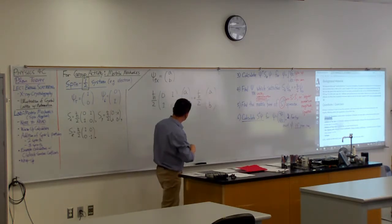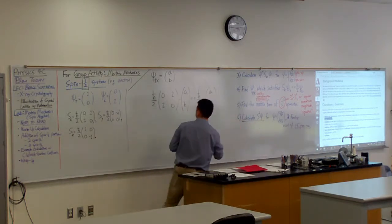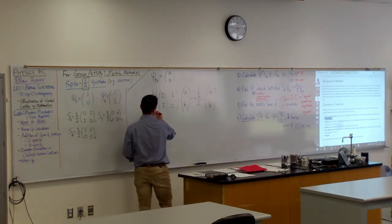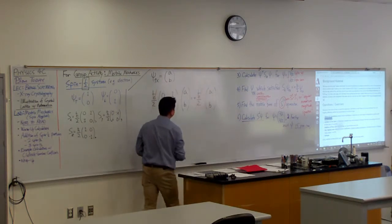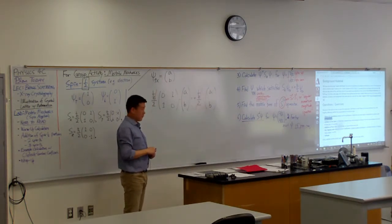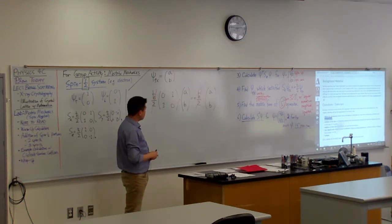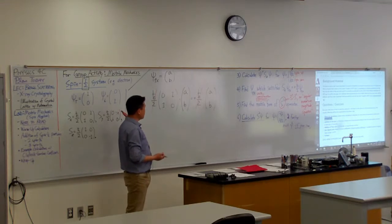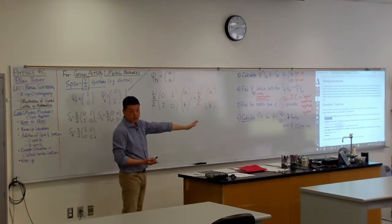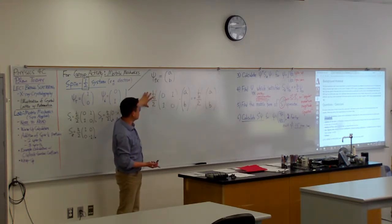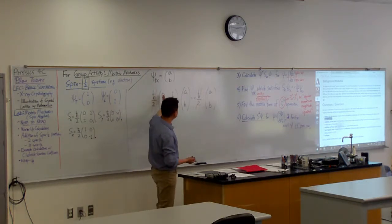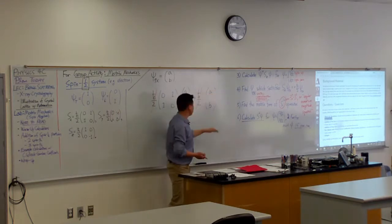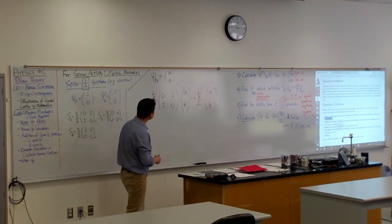So let's simplify some things already. So h bar over two cancels out, can get rid of that. And there is a systematic way to do it. The systematic way to do it would be to write out your system of equations. Because what this represents is a system of two equations. Because when you write it out, this times this gives you the first row. This times this gives you your second row. So maybe I should do it that way.